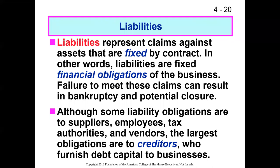A liability represents a claim against the organization that is fixed by contract. Liabilities are financial obligations of the business. If you don't meet those obligations, creditors can take you to court, force you into bankruptcy, and potentially close your organization to sell off its assets. At a minimum, they can take ownership of the organization, hire new management, and run the business themselves. Failure to pay your liabilities is a bad thing at the end of the day.